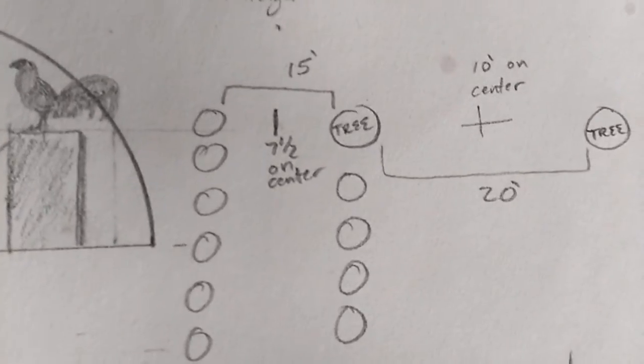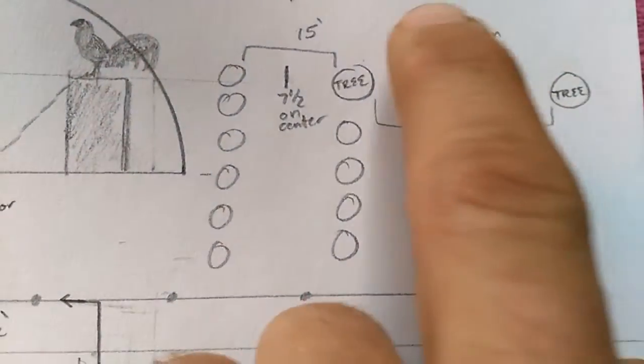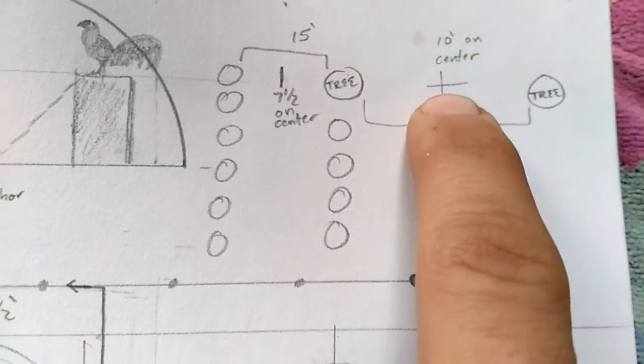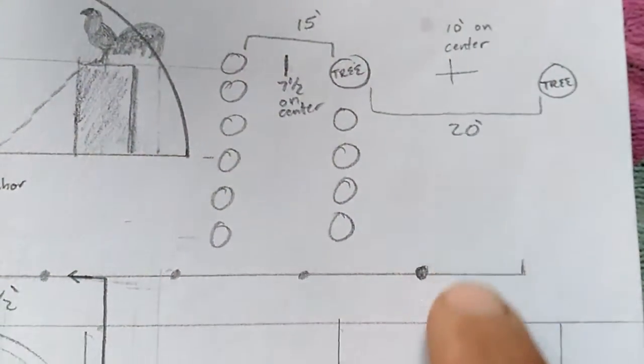So case in point here, let's say between these two trees I've got 20 feet. I'm just going to mark it 10 foot on center and run my line down through this way.